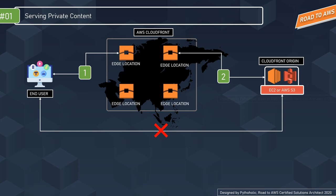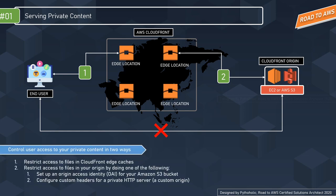When we speak of data or content distribution, we must also speak about content restriction. The end user speaks to the edge location, which in turn acts as a proxy to communicate with the origin server. The question we are going to answer is: how do we control user access to private content? There are two points: first, restricting access to files in CloudFront edge caches — we discussed geo-restrictions and third-party geo-location services. Two important mechanisms here are signed URLs and signed cookies. Second, restricting access to files in your origin.